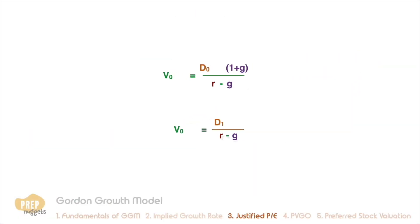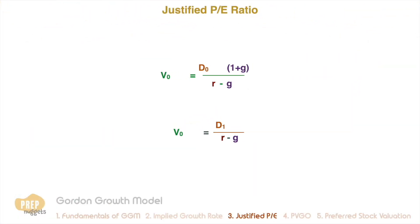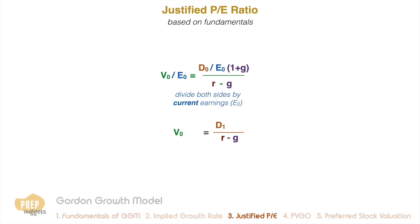Another application of the Gordon growth model is to calculate the justified price-to-earnings ratio of the firm based on the firm's fundamentals. If we divide both sides of the equation by current earnings, E0, we get this equation.